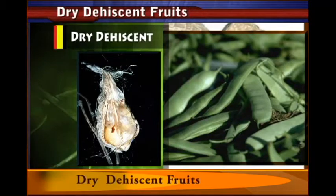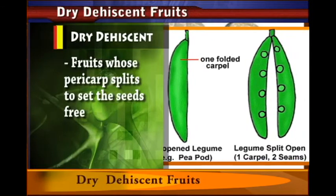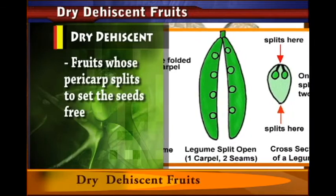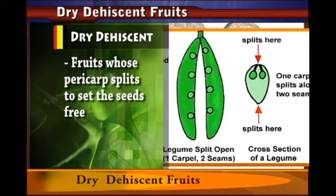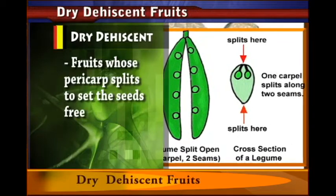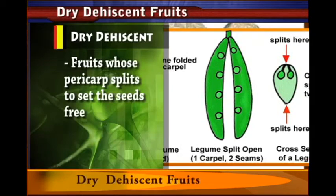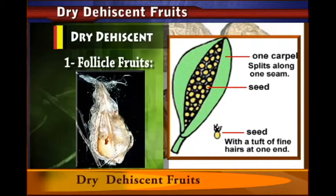Dry dehiscent fruits are fruits whose pericarp splits open to set the seeds free. The pericarp, which is the outside covering, opens up and splits, allowing the seeds to flow out. These are the dry dehiscent fruits, and we are going to see some types that split open to release their seeds. One of the types of dry dehiscent fruits is the follicle.